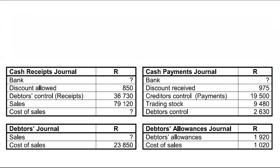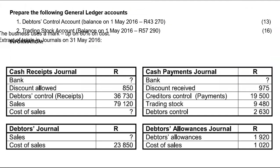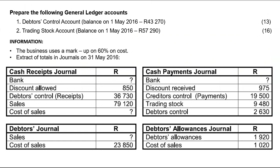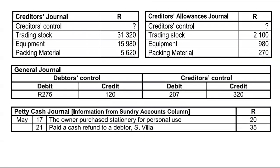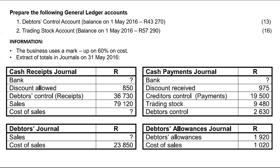From that information, please prepare those accounts. Re-watch the videos that covered this format. Calculate the question marks before completing the General Ledger. When you're done, please prepare your Debtors Control account and your Trading Stock account. Use that information to prepare those two accounts.